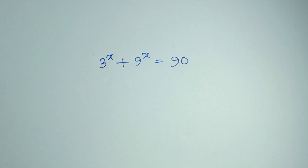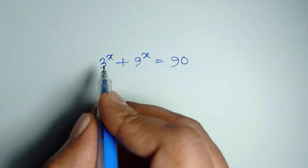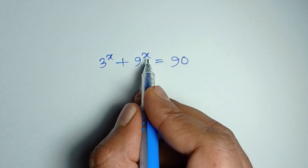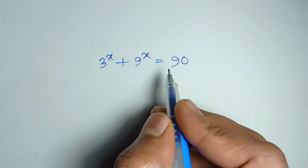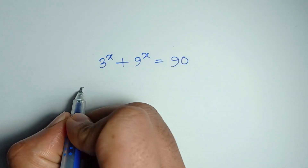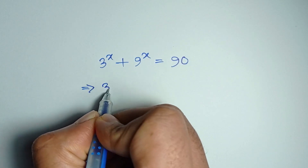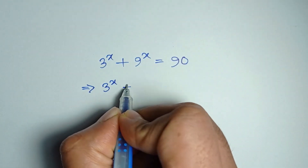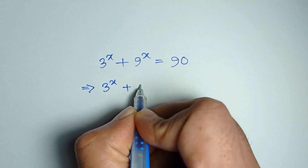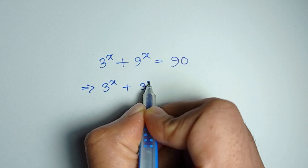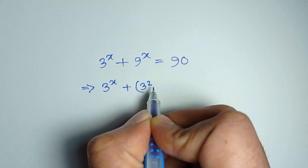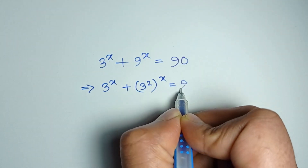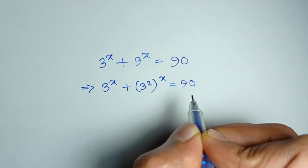Hi everyone! We have to solve: 3 to the power x plus 9 to the power x is equal to 90. Or, 3 to the power x plus 3 squared to the power x is equal to 90.